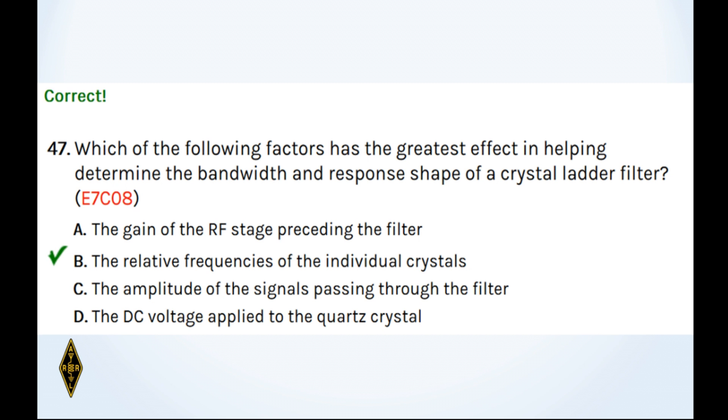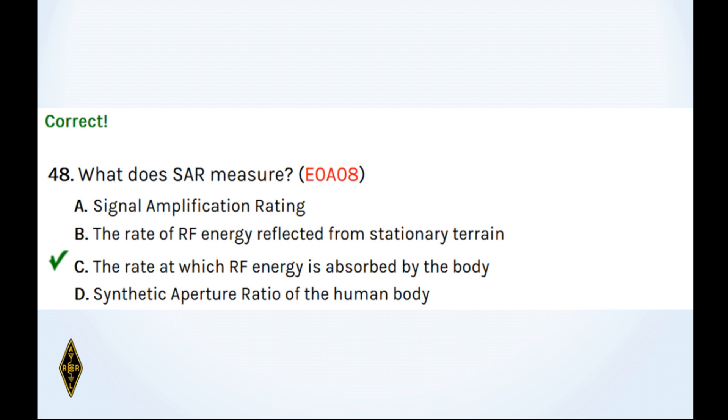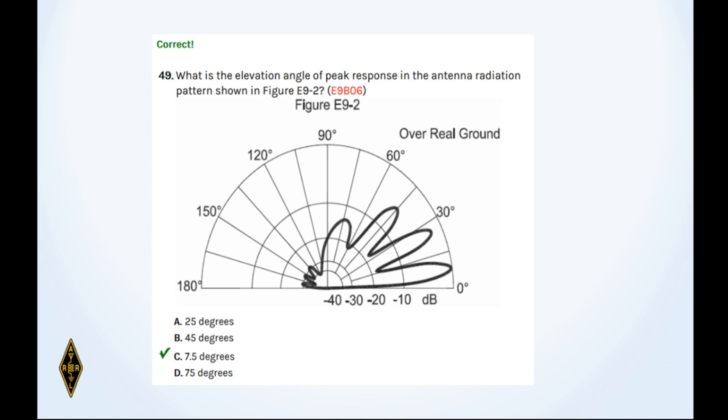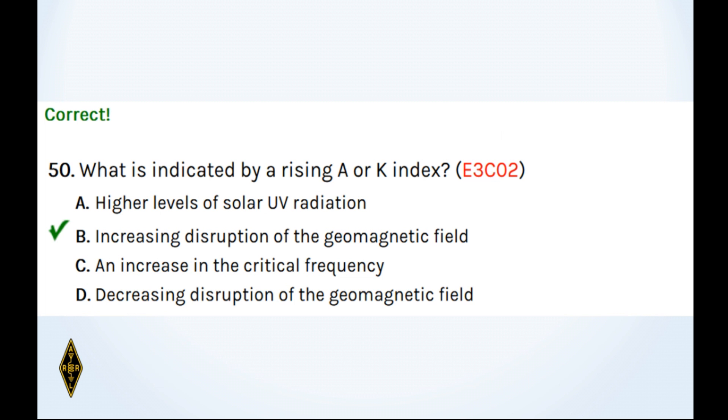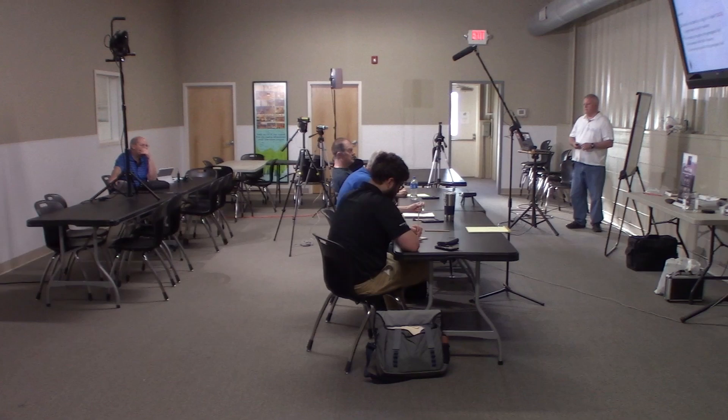And what does specific absorption rate measure? S-A-R. It's the rate at which RF energy is absorbed by the human body. And 49, the elevation angle? Well, if you look closely there, it's 7.5 degrees. That's of the main lobe. That's the bottom lobe that's out of the 0 dB ring. And 50, what is indicated by a rising A or K index? Well, that's increasing disruption of Earth's geomagnetic field. So that's the end of practice test number one. How did we do?